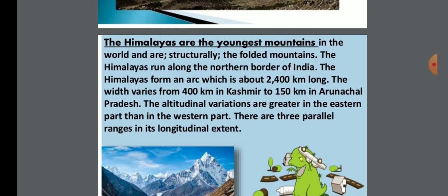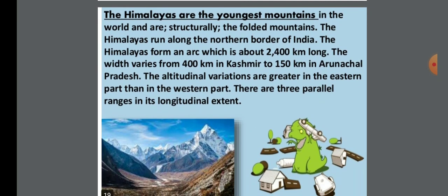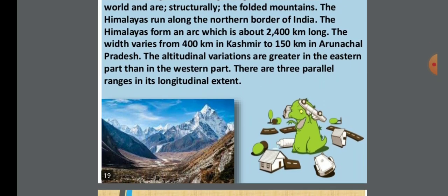The width of the Himalayas varies — in Kashmir the width is 400 km, while in Arunachal Pradesh, the easternmost state of India, the width is 150 km. Altitude variations are greater in the eastern parts than in the western parts.